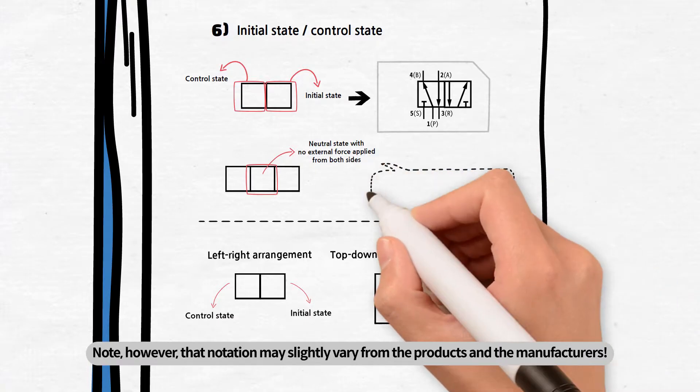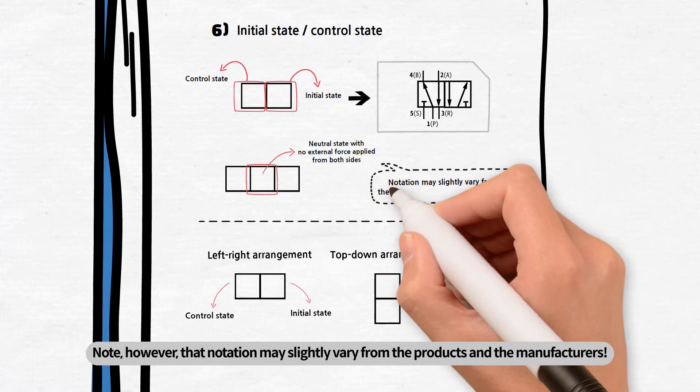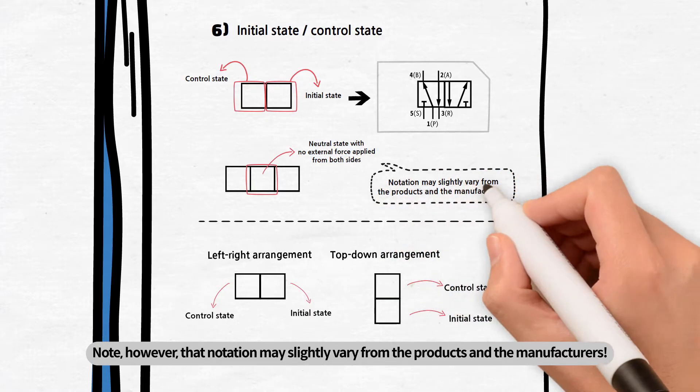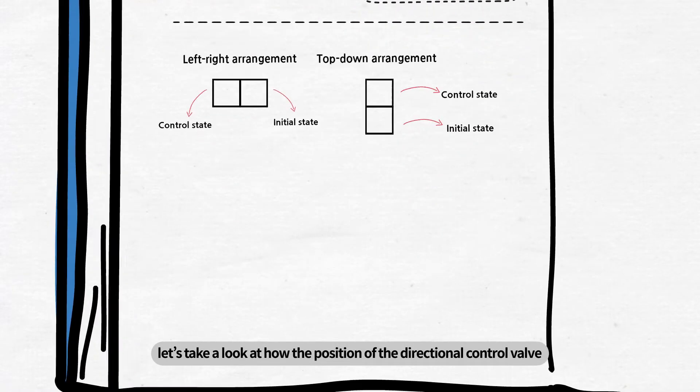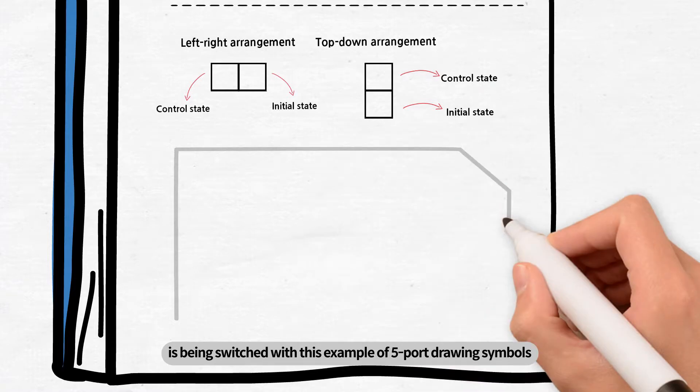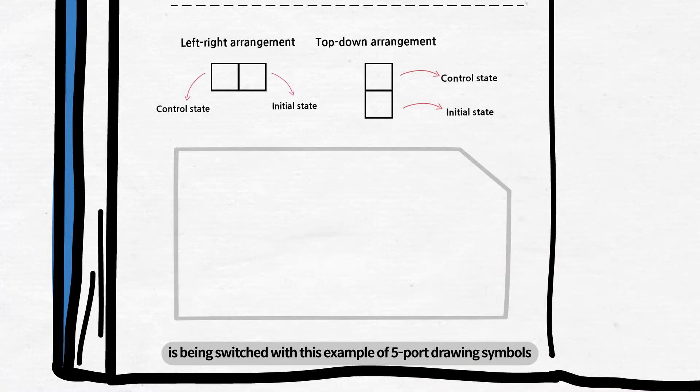Note, however, that notation may slightly vary from the products and the manufacturers. Now, let's take a look at how the position of the directional control valve is being switched with this example of five port drawing symbols.